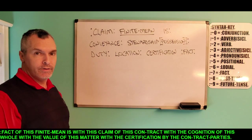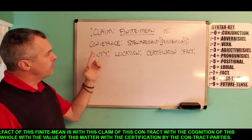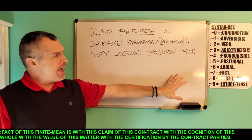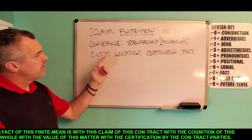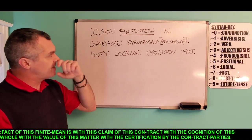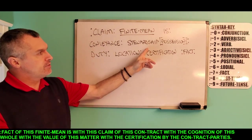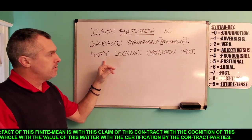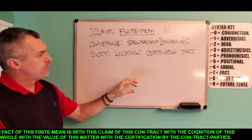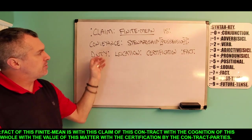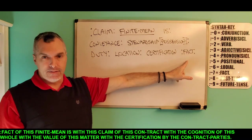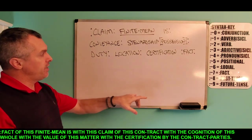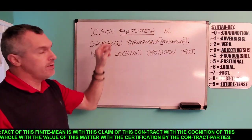The next word in the finite mean of fact is 'claim.' For the claim of the finite mean is with the conveyance of the stewardship, with the duty of the location, with the certification by the fact. A claim — you're conveying something with the claim. The conveyance is possessing the finite mean. Concerned with stewardship or possession. Possessive of the duty. Concerned with the location, this claim. The certification is possessing the location, the duty, and the authority is the fact — which we are giving the finite mean to right now in this now space continuum.